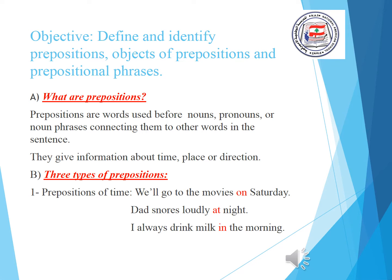First of all, prepositions of time. For example: 'We'll go to the movies on Saturday.' On is a preposition of time, since it tells me when we are going to the movies. 'Dad snores loudly at night.' At is a preposition, since it tells me the time when Dad snores. 'I always drink milk in the morning.' In is a preposition of time, since it tells me when I drink milk.